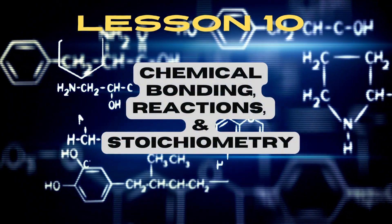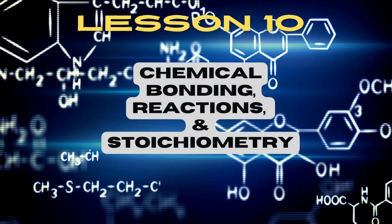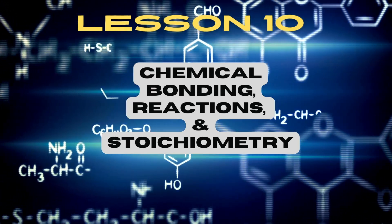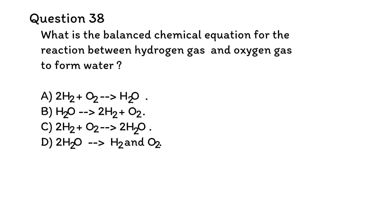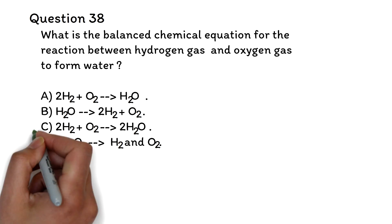Lesson 10: Chemical Bonding, Reactions, and Stoichiometry. Question 38: What is the balanced chemical equation for the reaction between hydrogen gas and oxygen gas to form water? a. 2H₂ reacts with O₂ to get H₂O. b. H₂O breaks down to 2H₂ and O₂. c. 2H₂ reacts with O₂ to give 2H₂O. d. 2H₂O breaks down to H₂ and O₂. The correct answer is c.